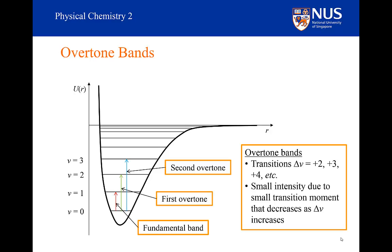So if we know what the fundamental frequency is and we know what the first overtone frequency is, we can get information about the anharmonicity. Because we know the energies from the Schrödinger solution of the Morse potential, we can use the information about the frequencies of the fundamental and the first overtone to determine what the anharmonicity constant is for that molecule.